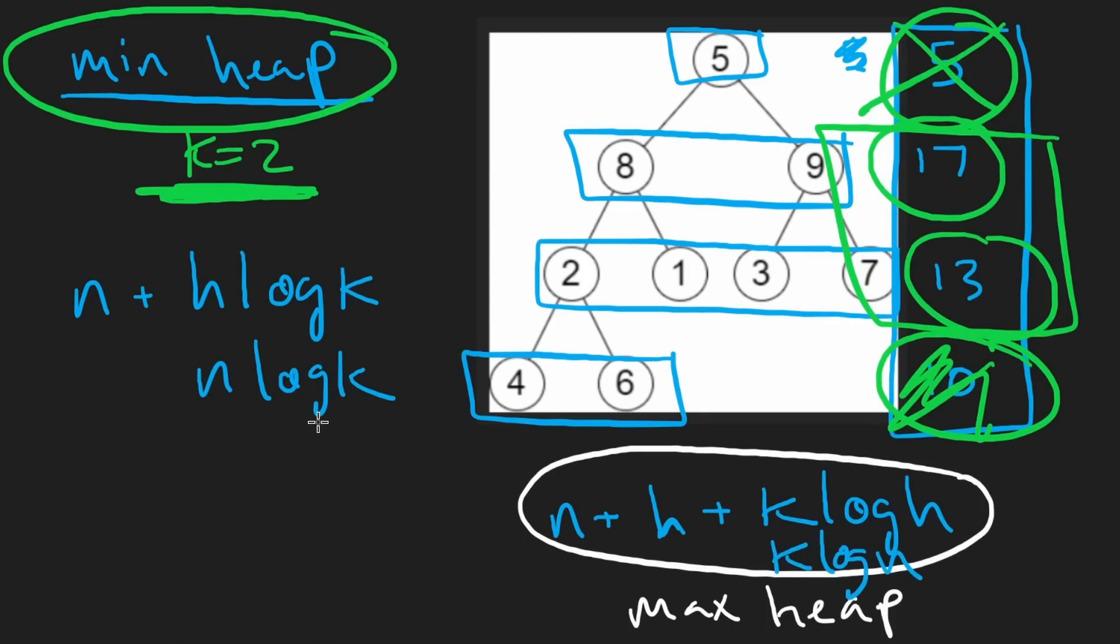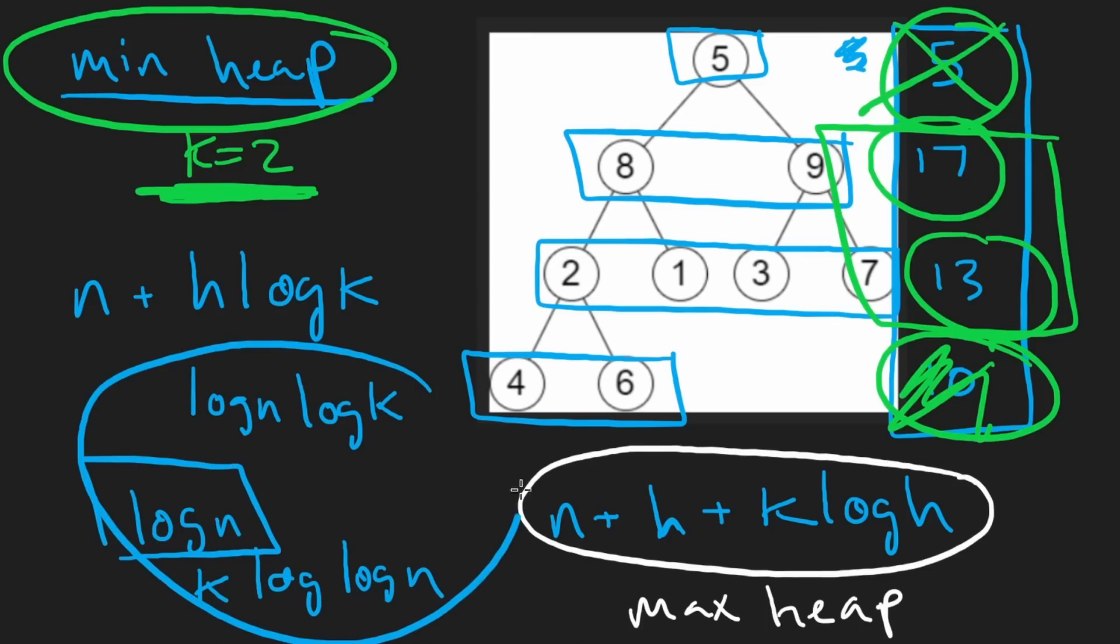So if the tree is not balanced, k could also be pretty big, like k could be approximately equal to n. So I guess in the worst case, both of these time complexities would be roughly similar. What about the case where the trees are balanced? Well, in that case, h would be approximately log n, in which case this time complexity would turn into log n times log k plus that n term. And then this time complexity would turn into k times log of log n. And I guess the upper bound of k itself is also equal to log n, roughly, if it's a balanced tree.